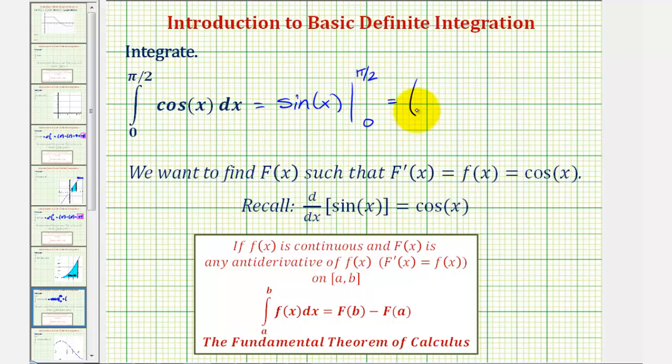So here we'd have big F of pi over two, that'd be sine pi over two, and then minus big F of zero, which would be sine zero.